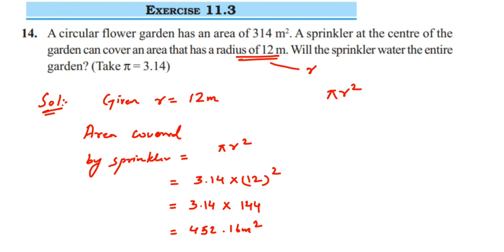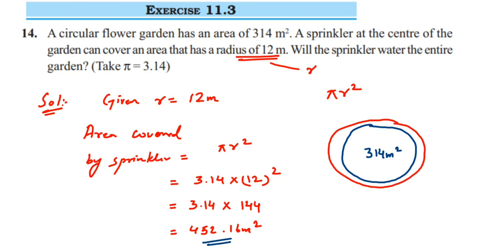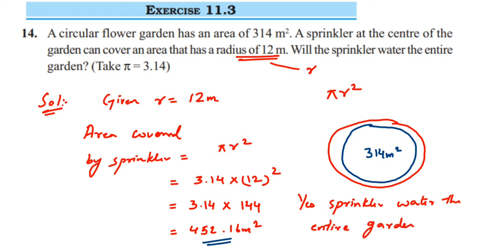The area of the flower garden is 314 square meters. We have found that the area covered by the sprinkler is 452.16 square meters, which is greater than the area of the circular garden. This means the sprinkler is covering more area than the garden, so we can conclude that yes, the sprinkler will water the entire garden. I hope this is easy to understand. If you have any further questions or doubts, you can drop a comment below. Thank you so much for watching.